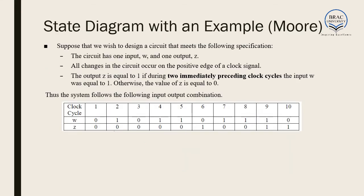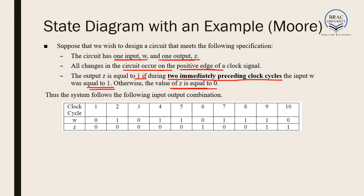Let us look at an example of a Moore type machine. Suppose we wish to design a circuit with one input W and one output Z. All changes in the circuit occur at the positive edge of the clock. The output Z equals 1 if during the two immediately preceding clock cycles the input W was equal to 1; otherwise Z equals 0.